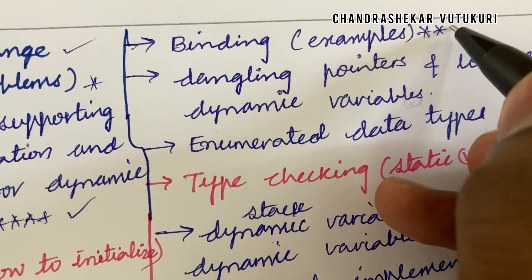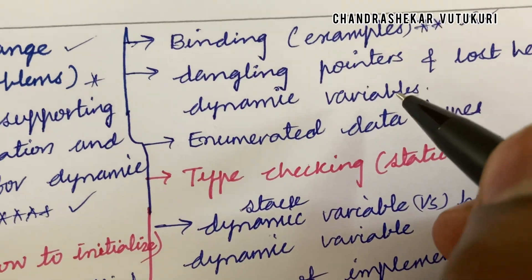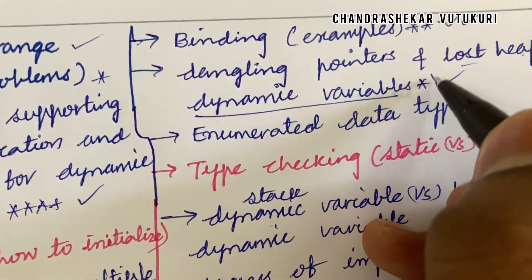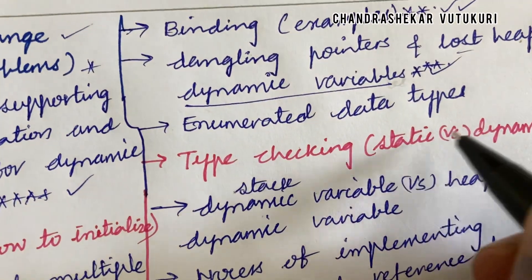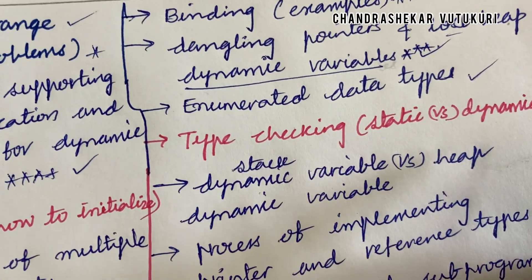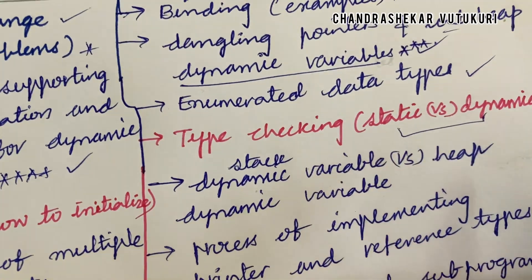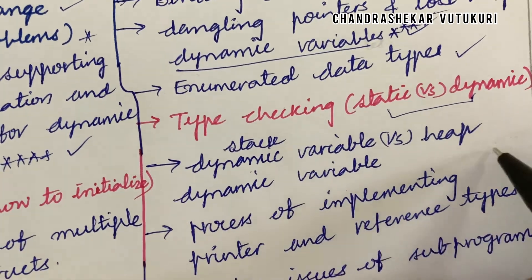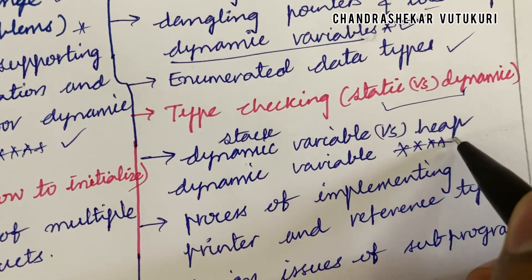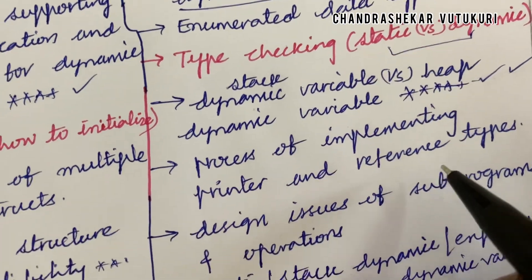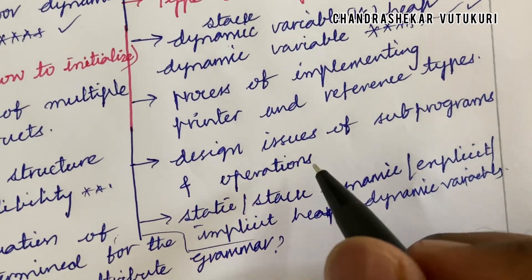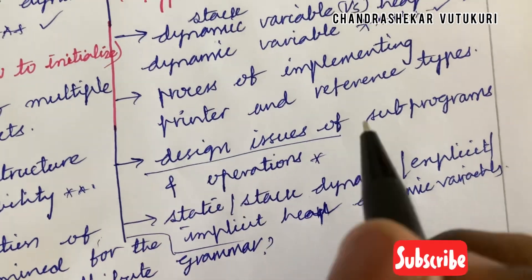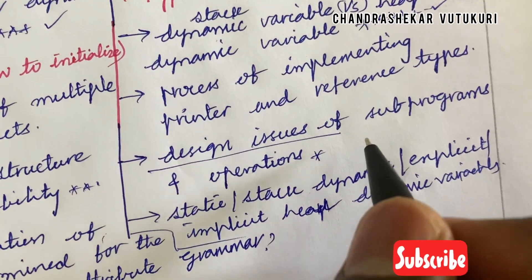Binding and binding times with examples is said to be a short question. Dangling pointers and heap dynamic variables related to dynamic variables — you may get a short or long question. Enumerated data types, type checking in static versus dynamic, static dynamic variable versus heap dynamic variable and their differences is said to be a topmost and sure-shot question. Process of implementing pointer and reference types, and design issues of subprograms and operations — design issues related to your question is a definite question.